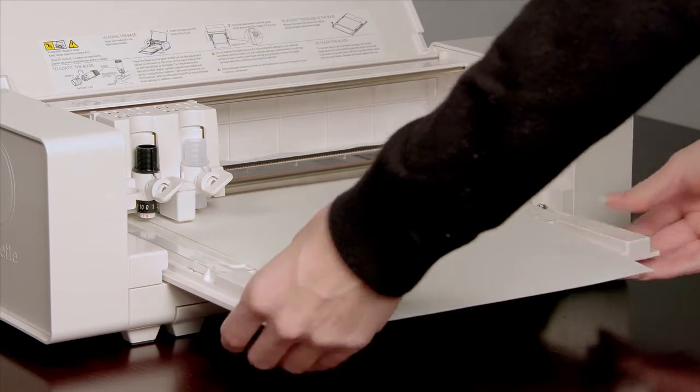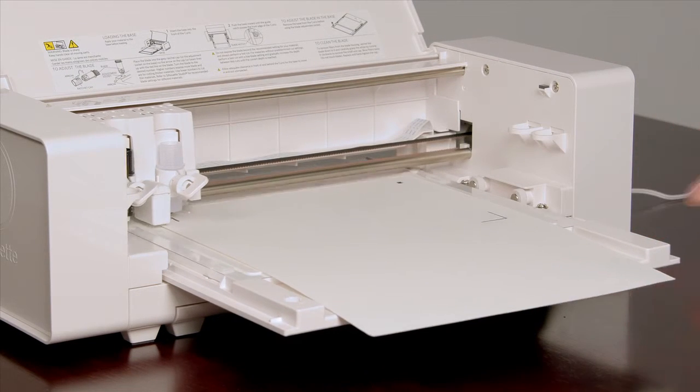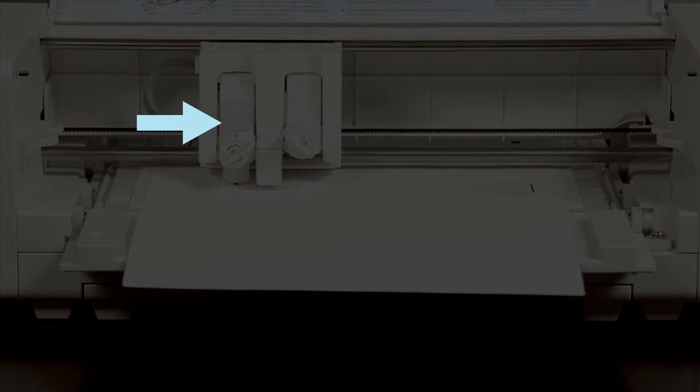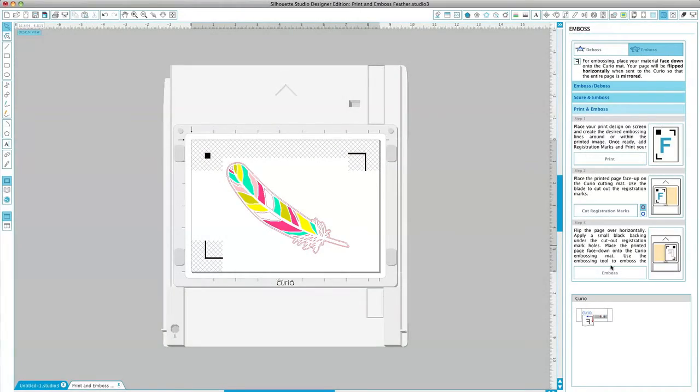Now load the base into the Curio. Load the embossing tool into the left hand tool holder. You may now click Emboss in the software.